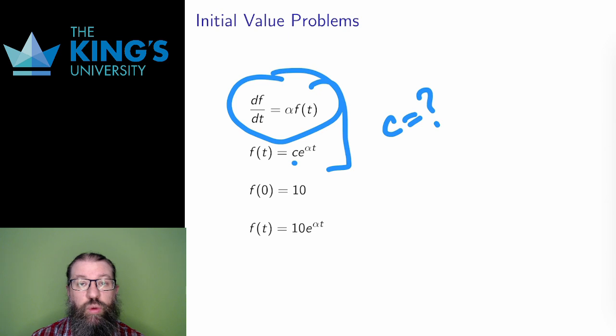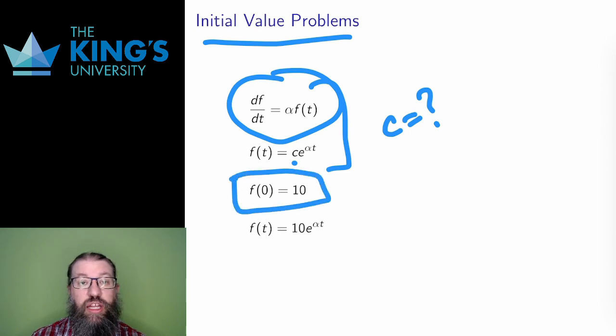A differential equation with an initial condition is called an initial value problem, or IVP. If f of 0 equals 10, that initial condition lets me determine that the constant c here must also have the value 10. And then I get a unique solution, one specific function.